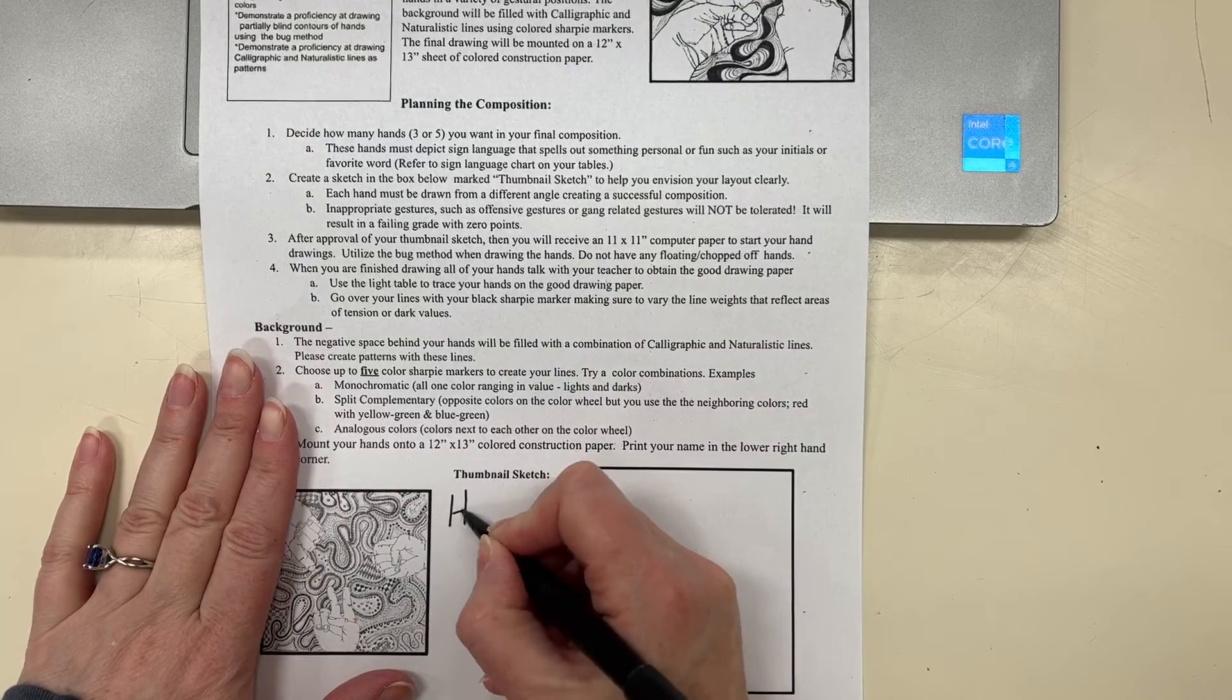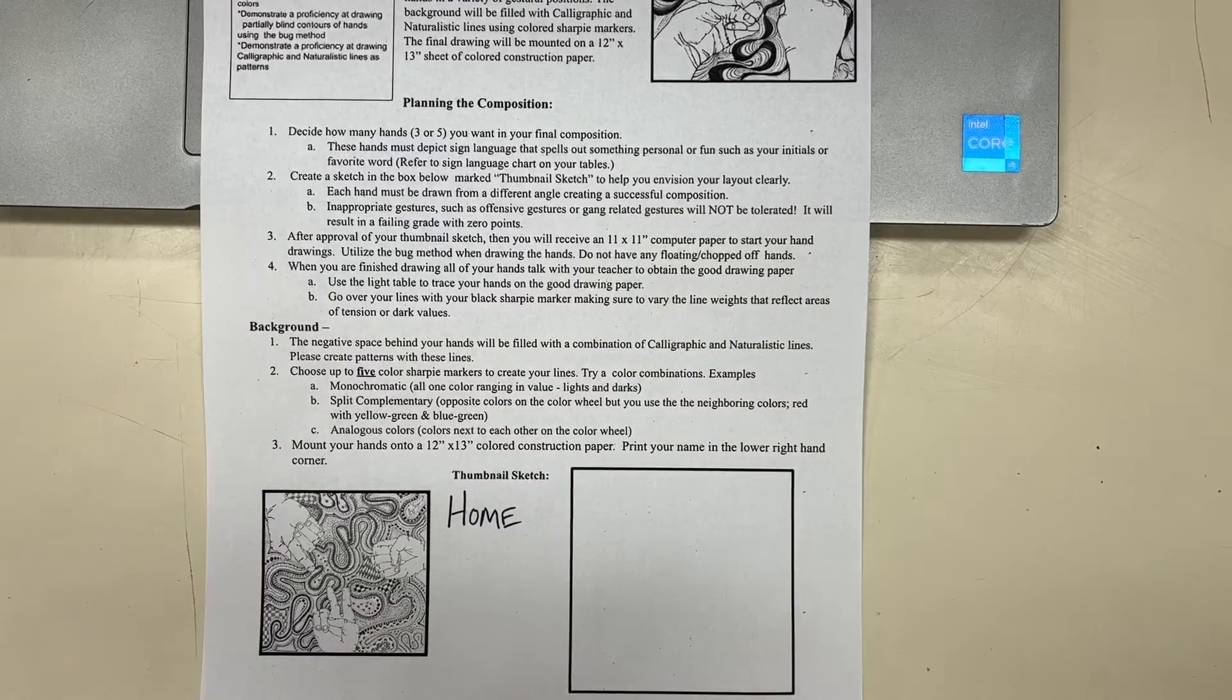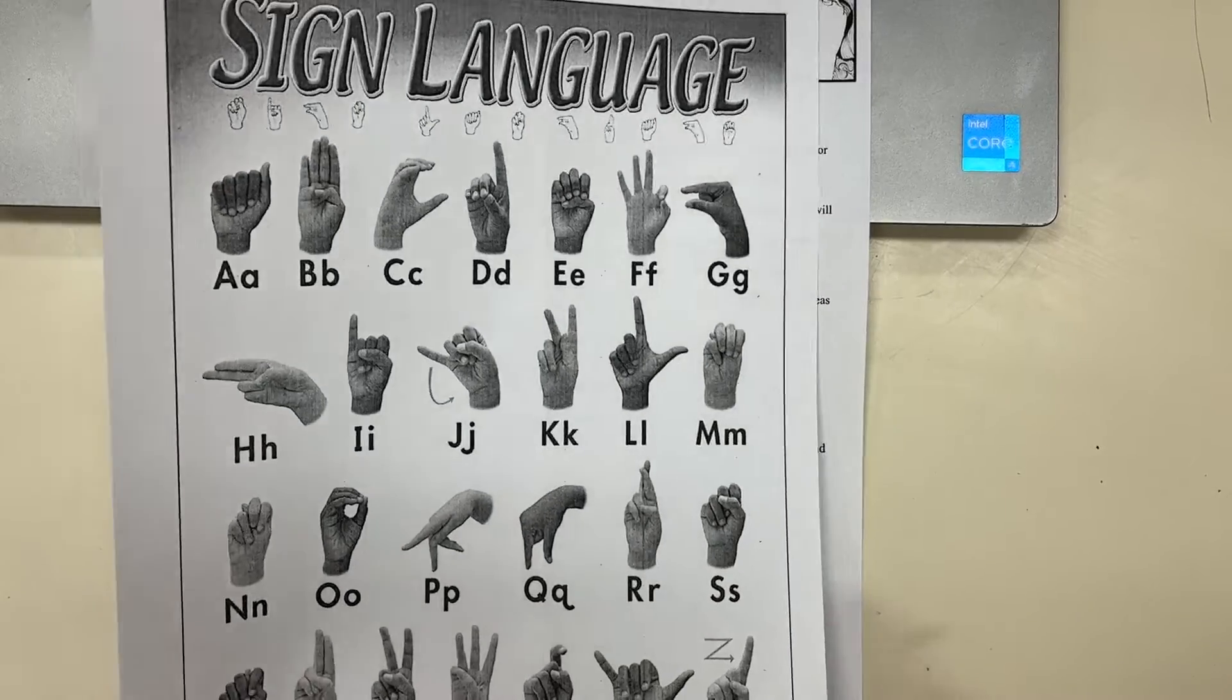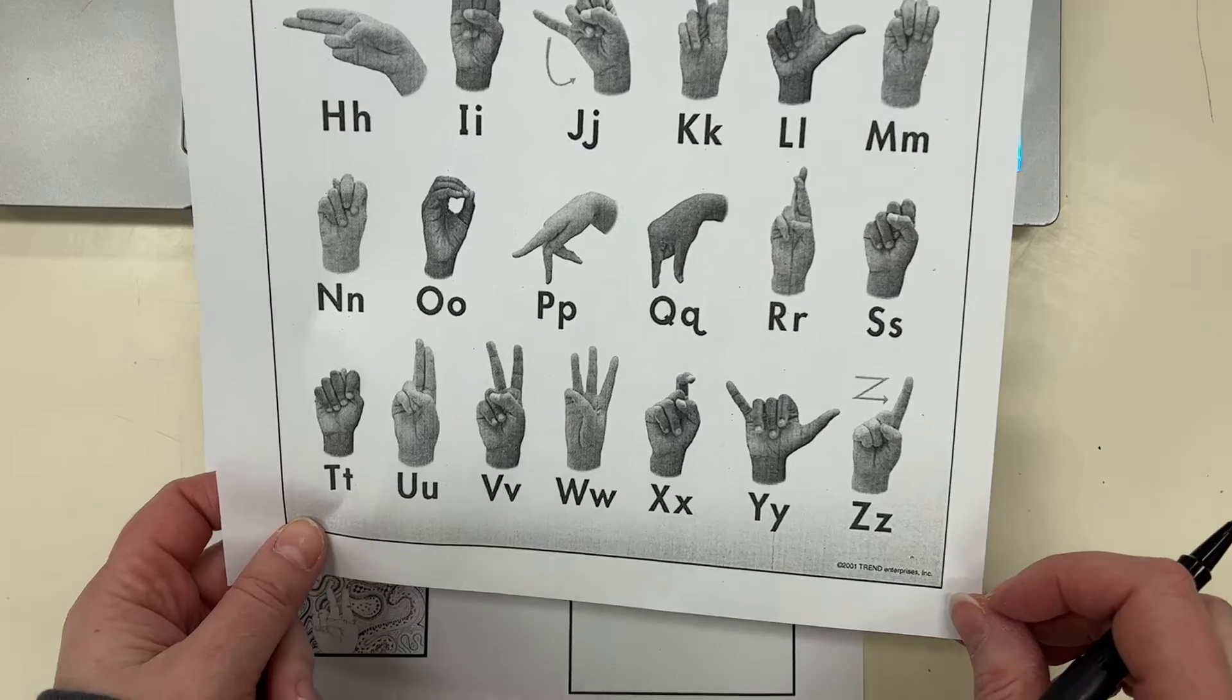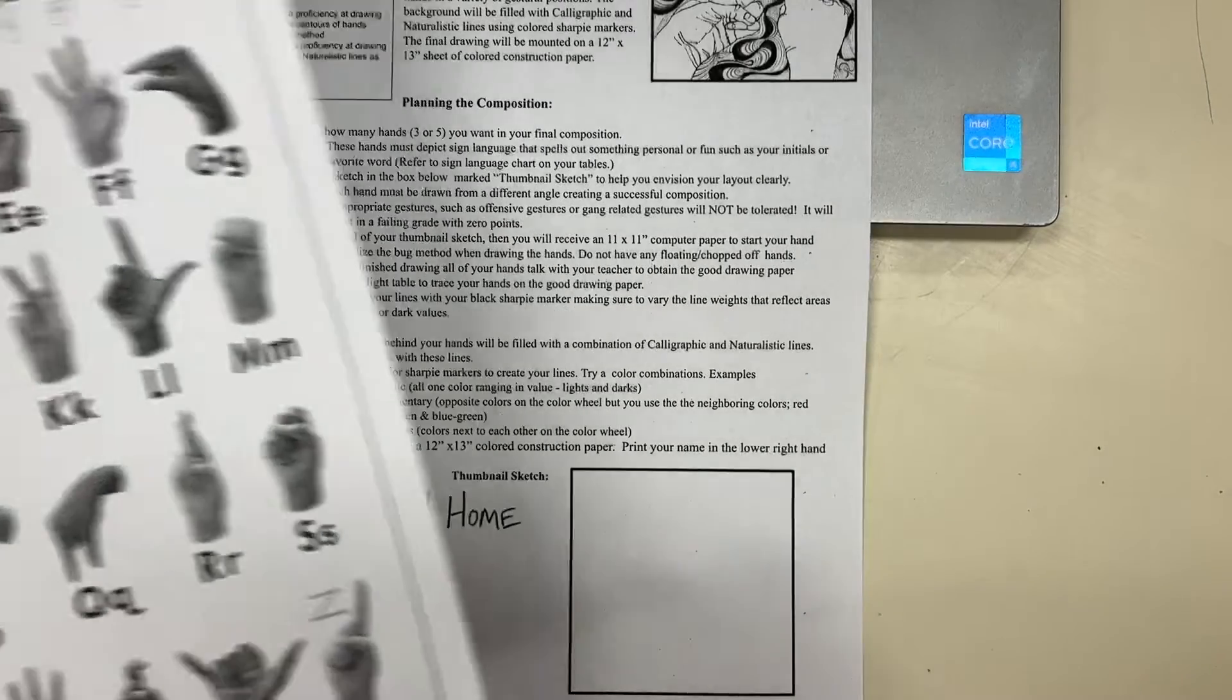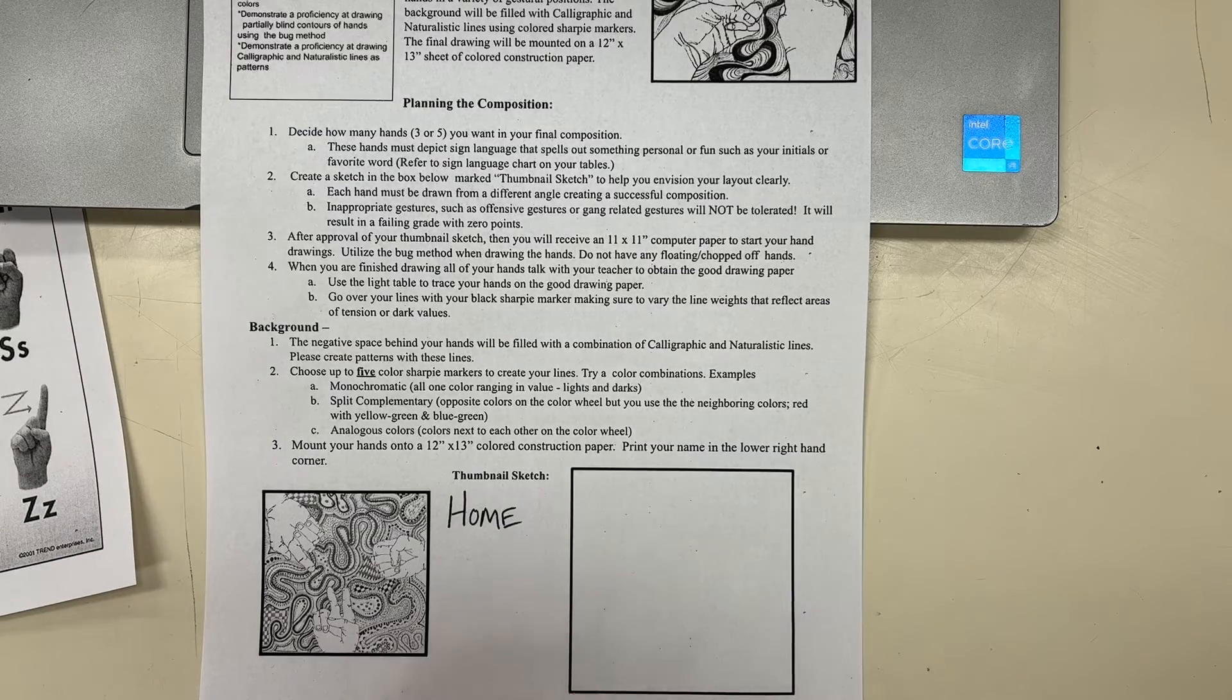I want to use the word HOME, so I'm going to refer to my sheet if you don't know ASL sign language and see the symbols for H, O, M, and E. I'm going to draw these out here on the sheet.